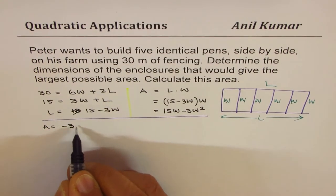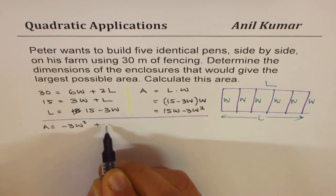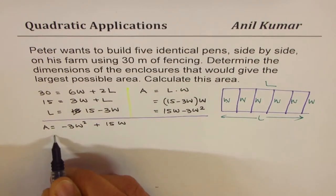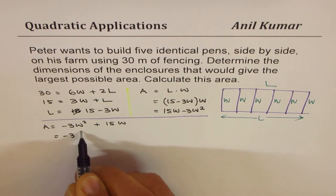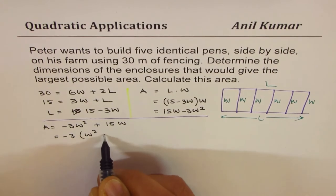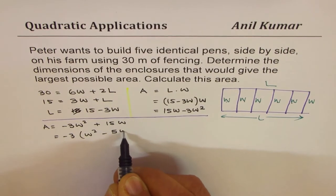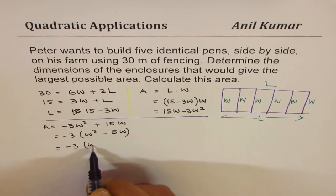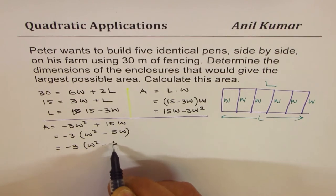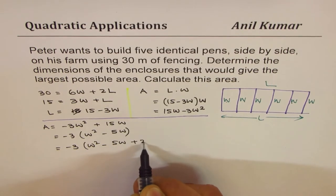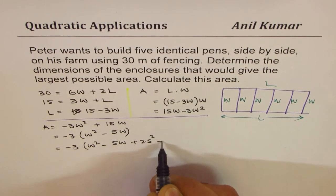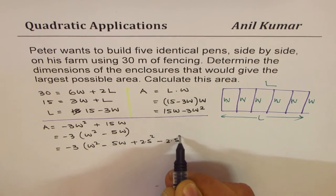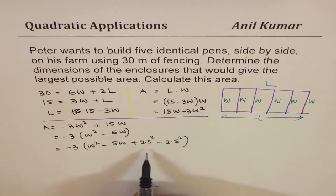Area equals, let me rewrite this as minus 3W² plus 15W. We can take minus 3 common, so we get W² minus 5W. To complete the square, we do half of this. So we get W² minus 5W plus 2.5² minus 2.5². Add and subtract 2.5.